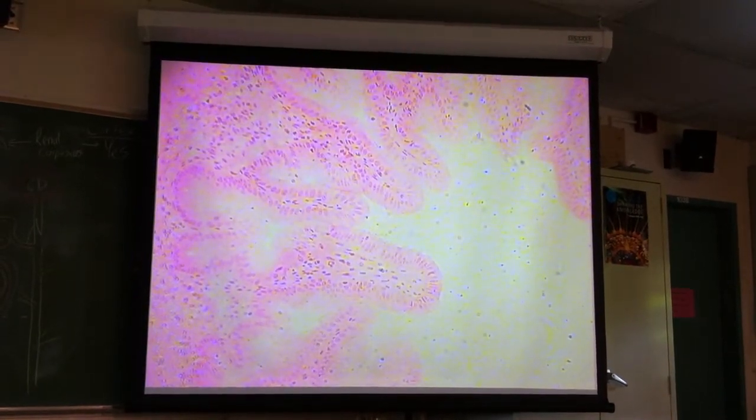So those finger-like projections that are sticking up into the lumen of the gallbladder are actually called rugae, just like we saw in the stomach. Not villi, although they do look like villi. We zoom up in power. We'll be able to see the simple columnar epithelium.